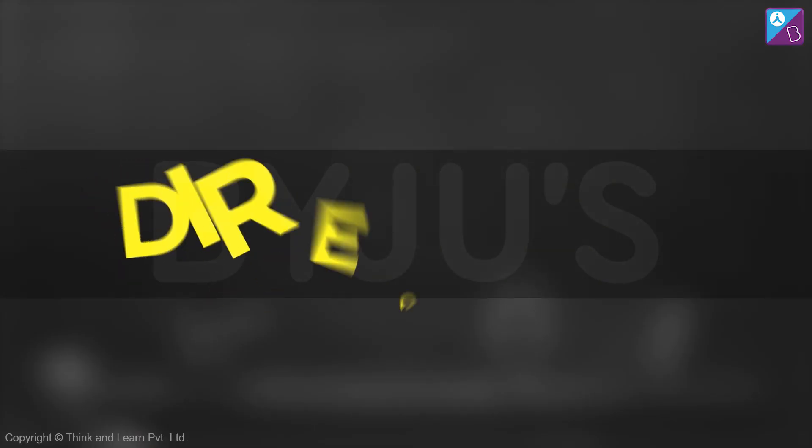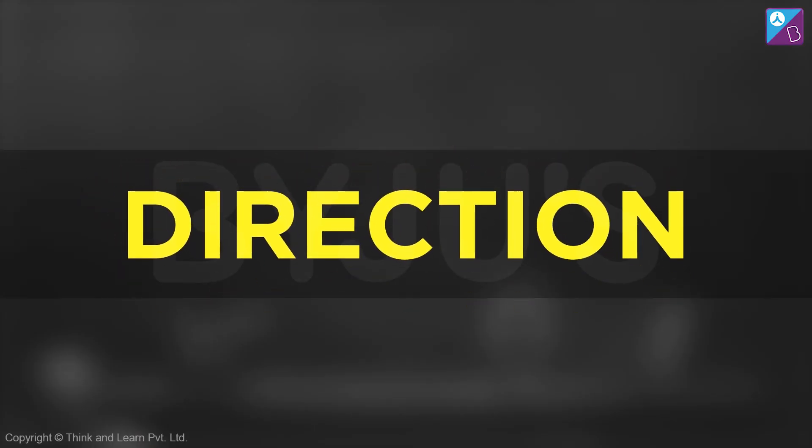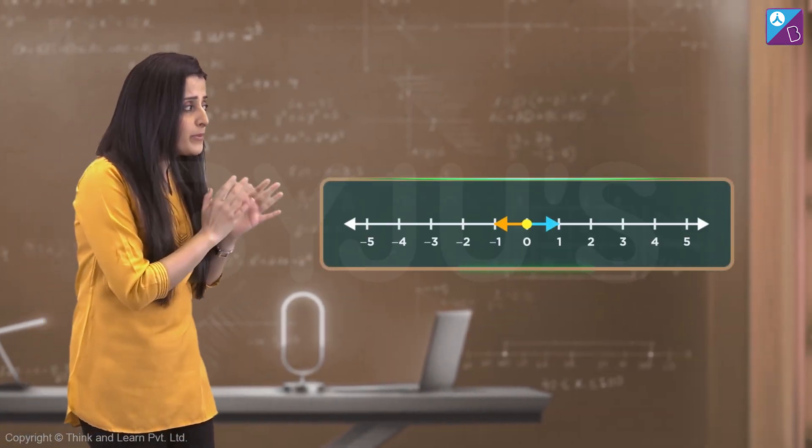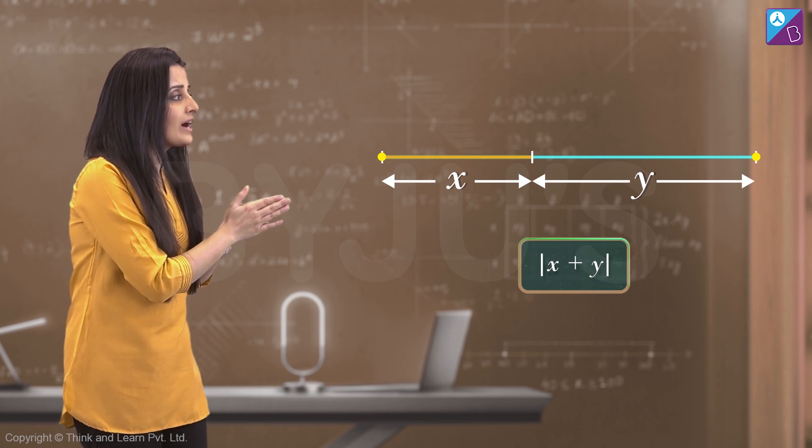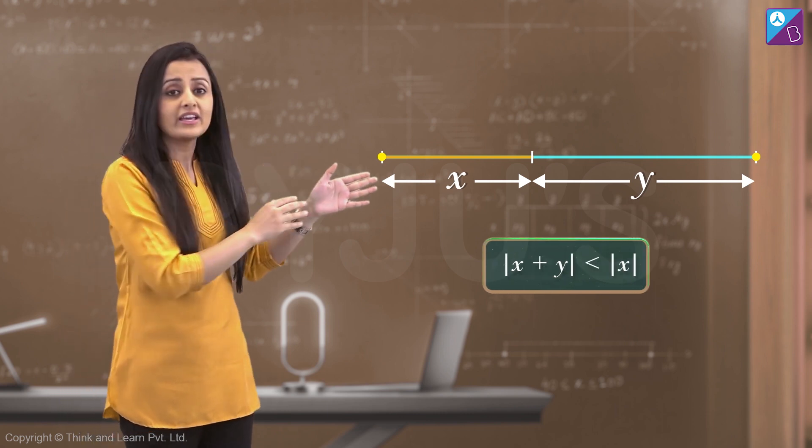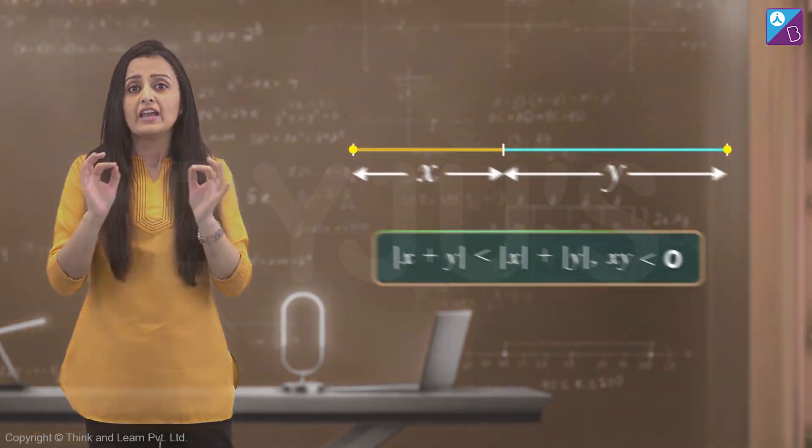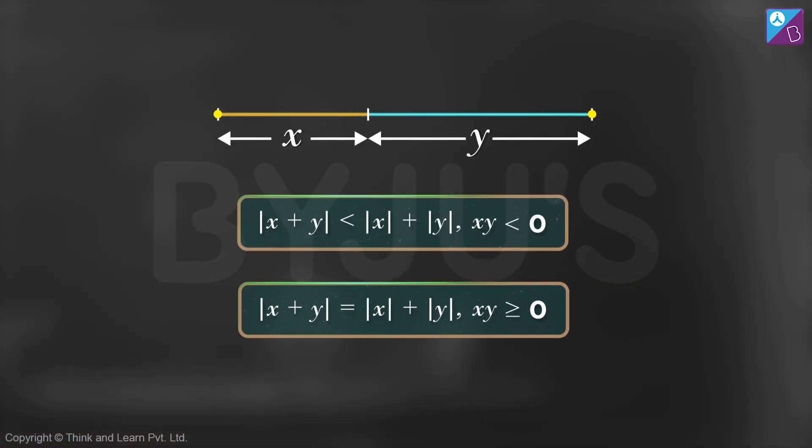Why do we end up with unequal or even equal displacement and distances? Mainly because of the direction. Therefore, we can conclude that when we deal with opposite directions or numbers with opposite signs, we say that mod of x plus y is less than mod x plus mod y. But if the product of all the numbers is non-negative, then both of these will be equal.